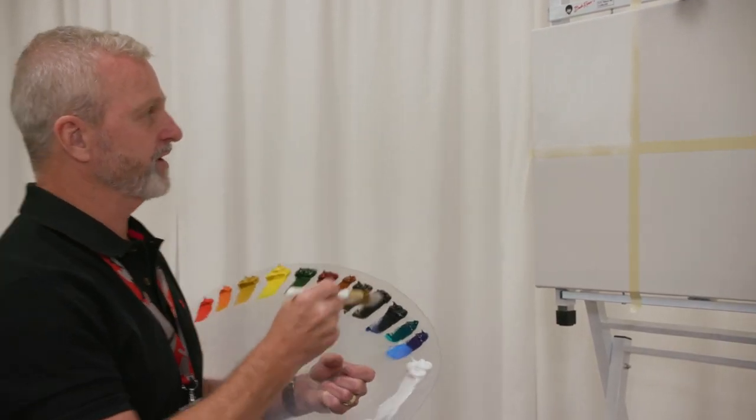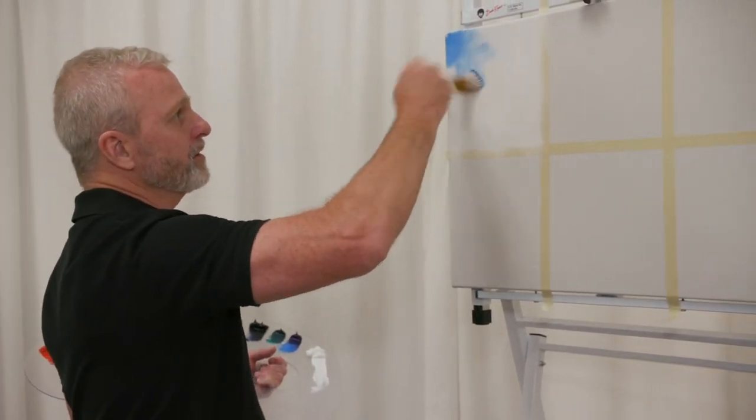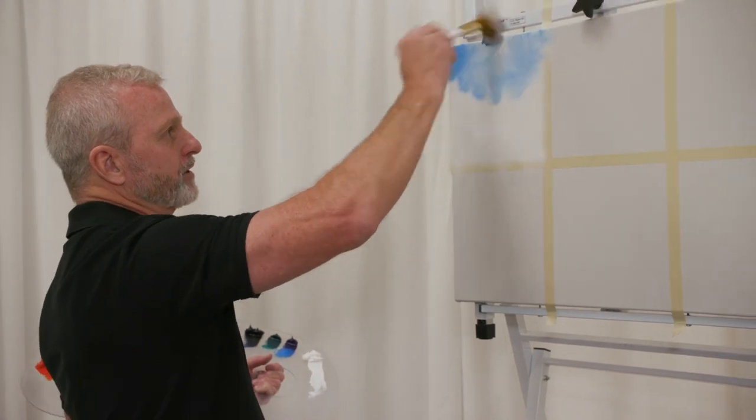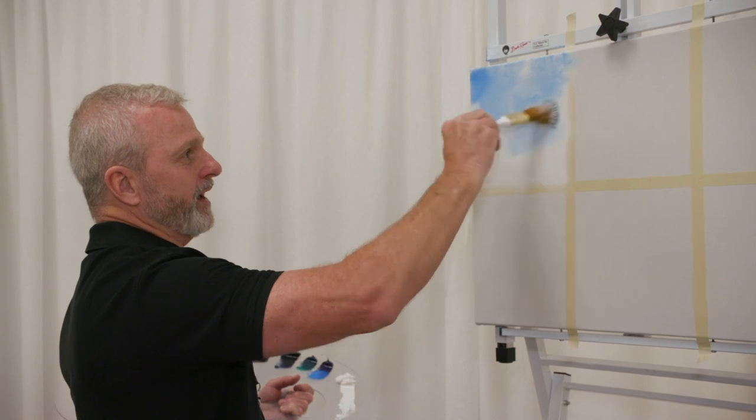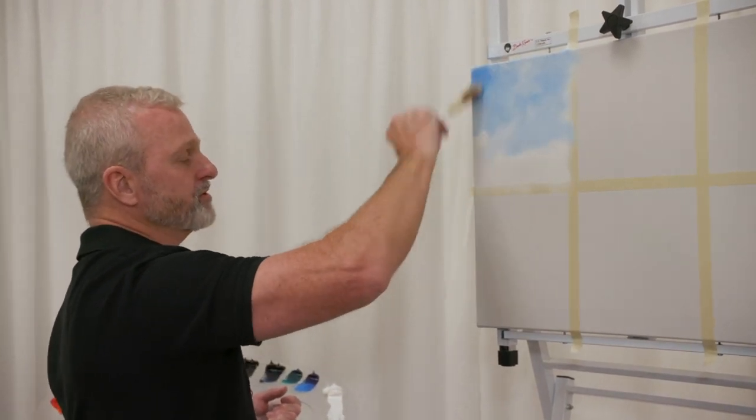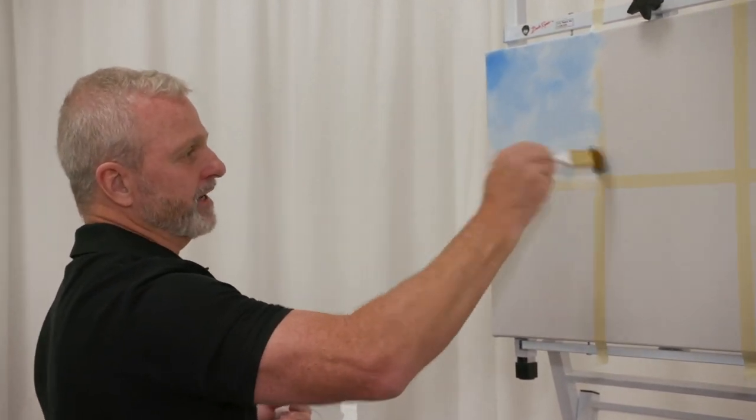If I want to put in a little bit of a sky color, I've got a nice pretty phthalo blue here, and just quickly crisscross that in. If you notice, I've got the Bob Ross brushes. It looks like a house painting brush, but it's not. It is a natural bristle brush made specifically for this technique.